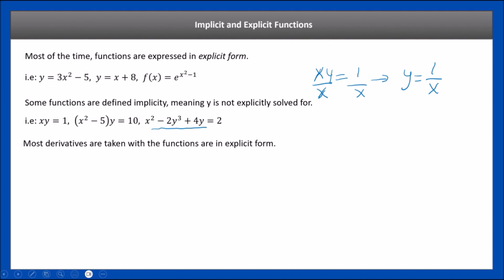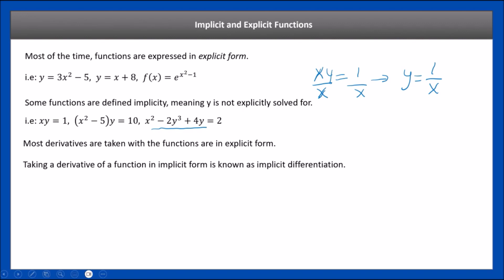That's implicit versus explicit. Most derivatives are taken in the explicit form. If you want to take it in the implicit form, this is known as implicit differentiation, and it involves using the chain rule from one of the previous lessons.